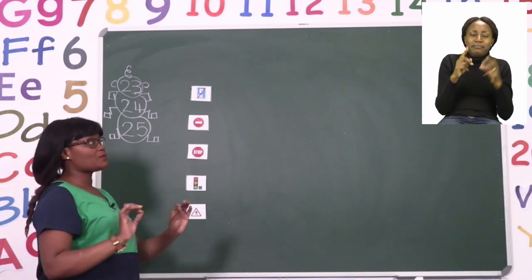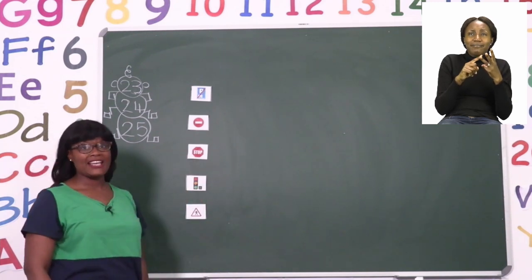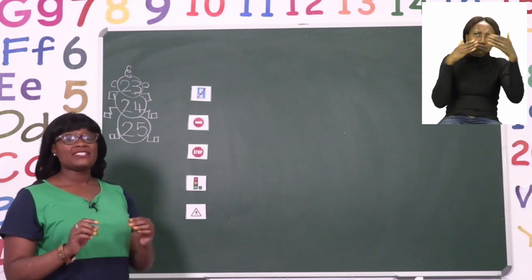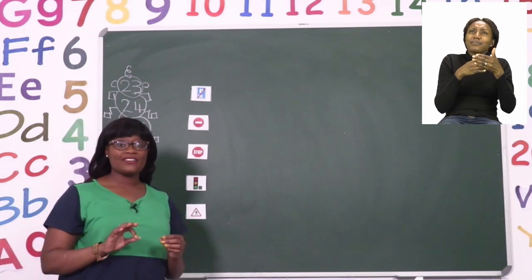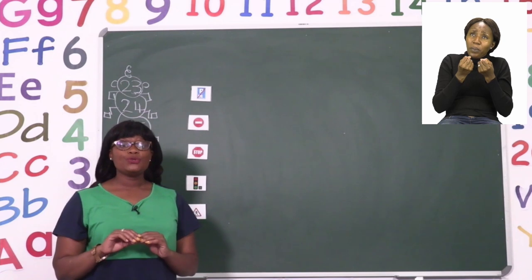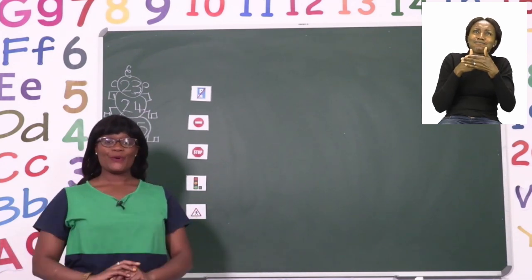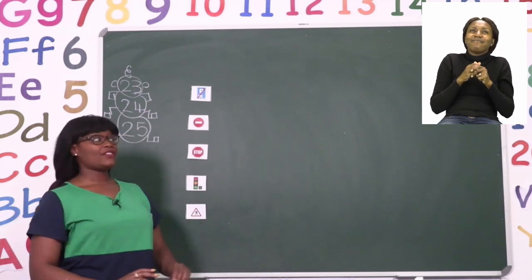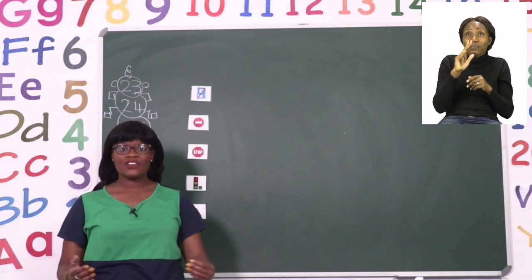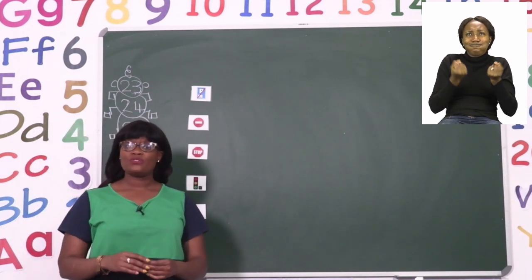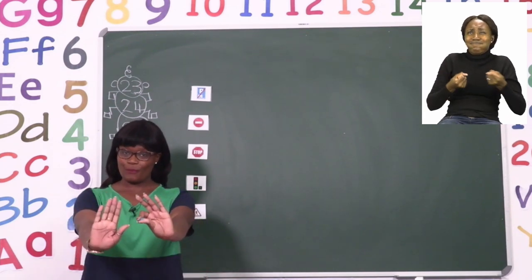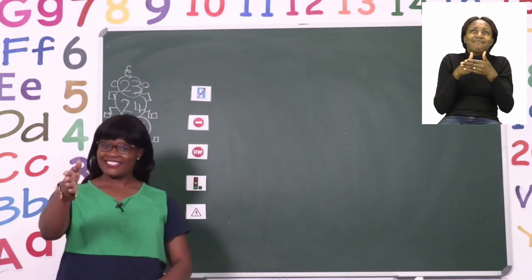The next sign we all know — it is a stop sign, which tells any vehicle on the road to stop. So when you see this one, the person on the bicycle, the person driving the car, the person driving the truck, must stop before they can continue.